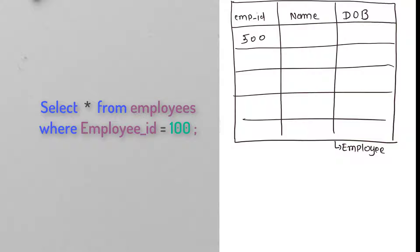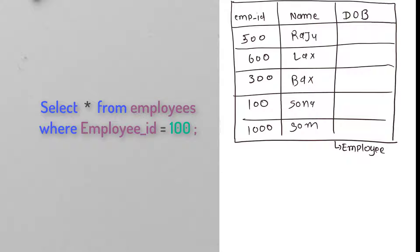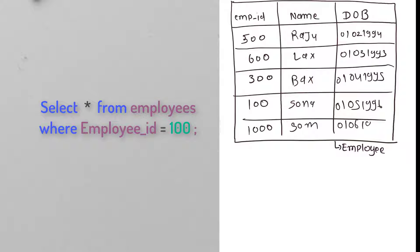Now let me feed the information into this table. The employee IDs are 500, 600, 300, 100, and 1000. The names are Raju, Laksh, Bhaksh, Sona, and so on. The dates of birth are 01/02/1994, 03/1993, 01/04/1995, 01/05/1996, and 01/06/1997 — something like that is contained in the employee table.